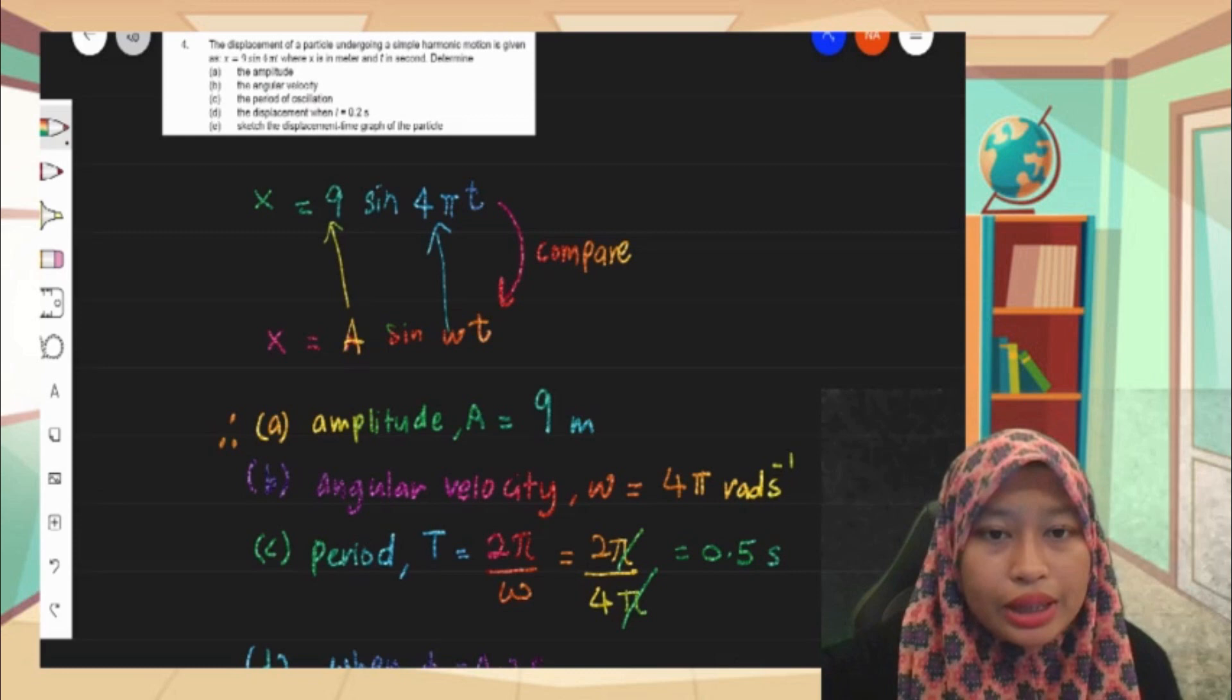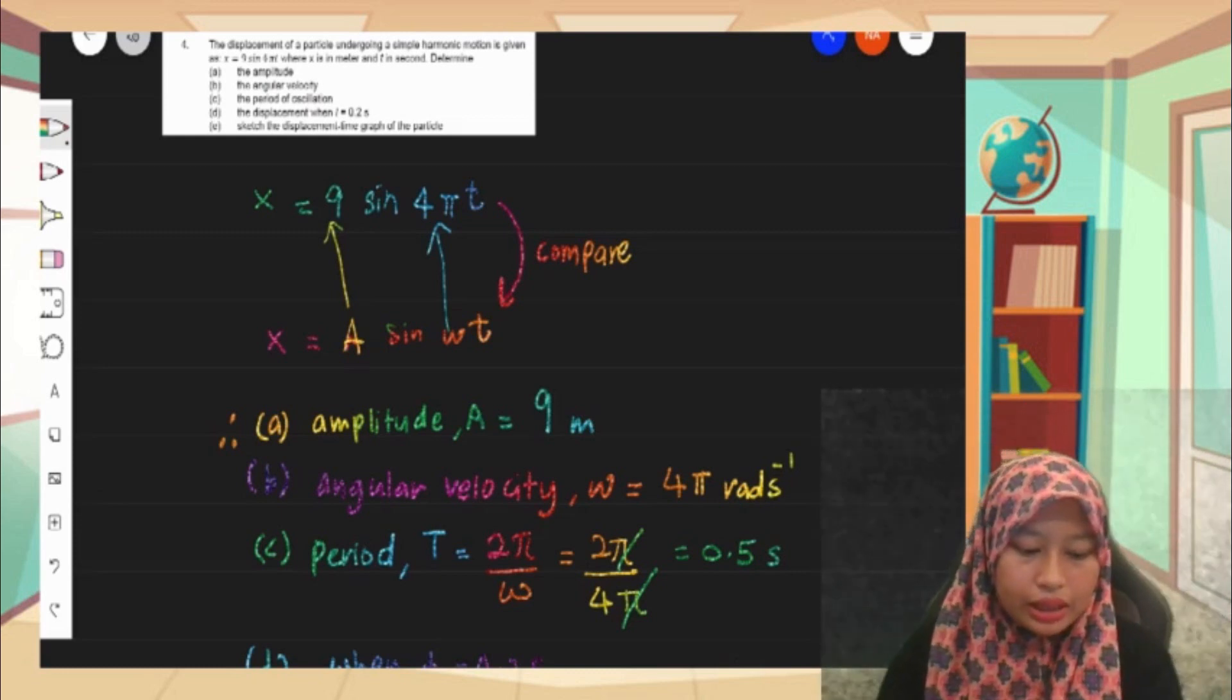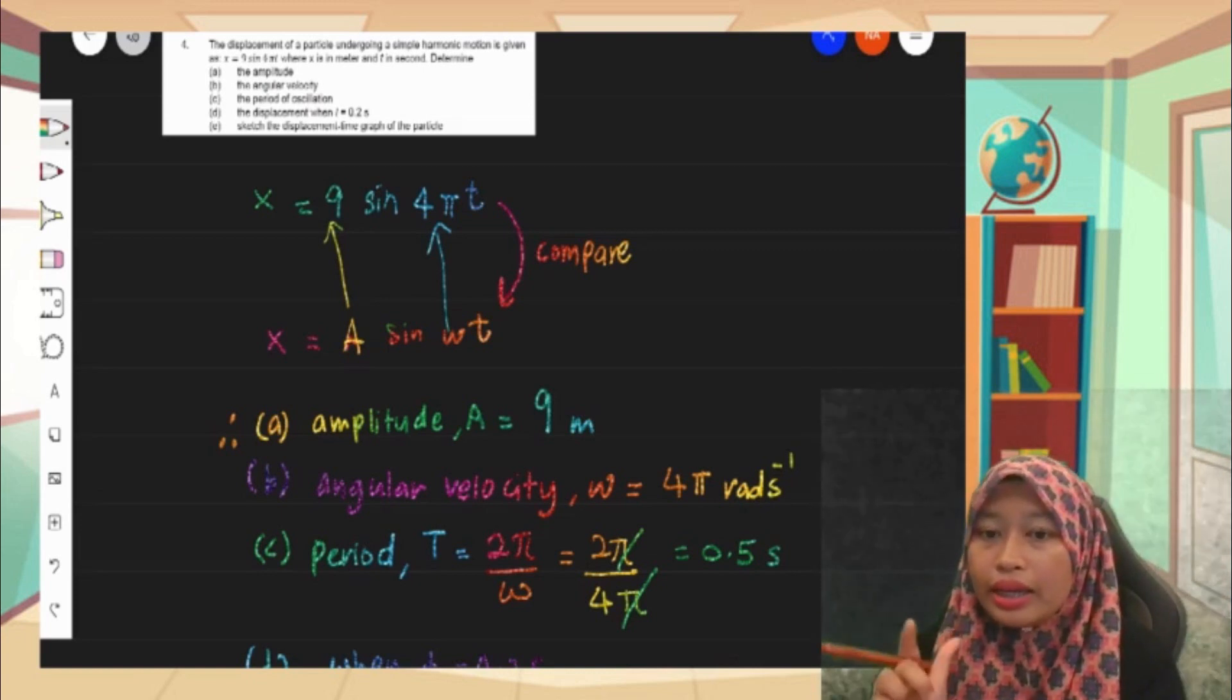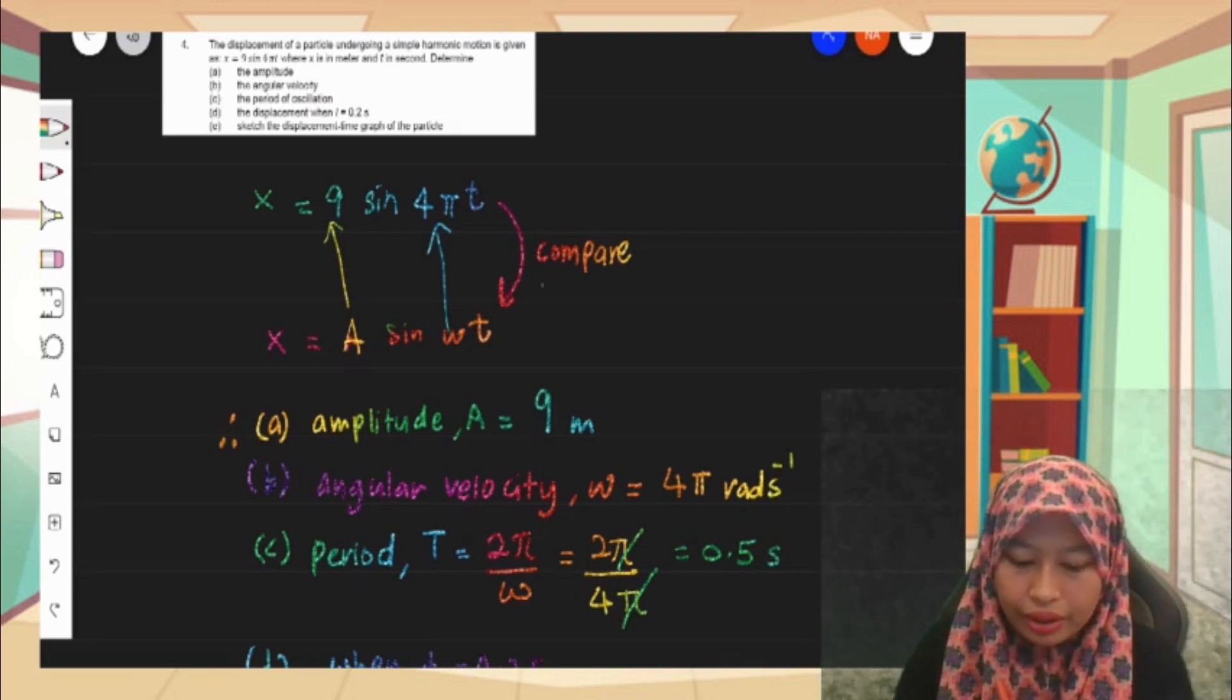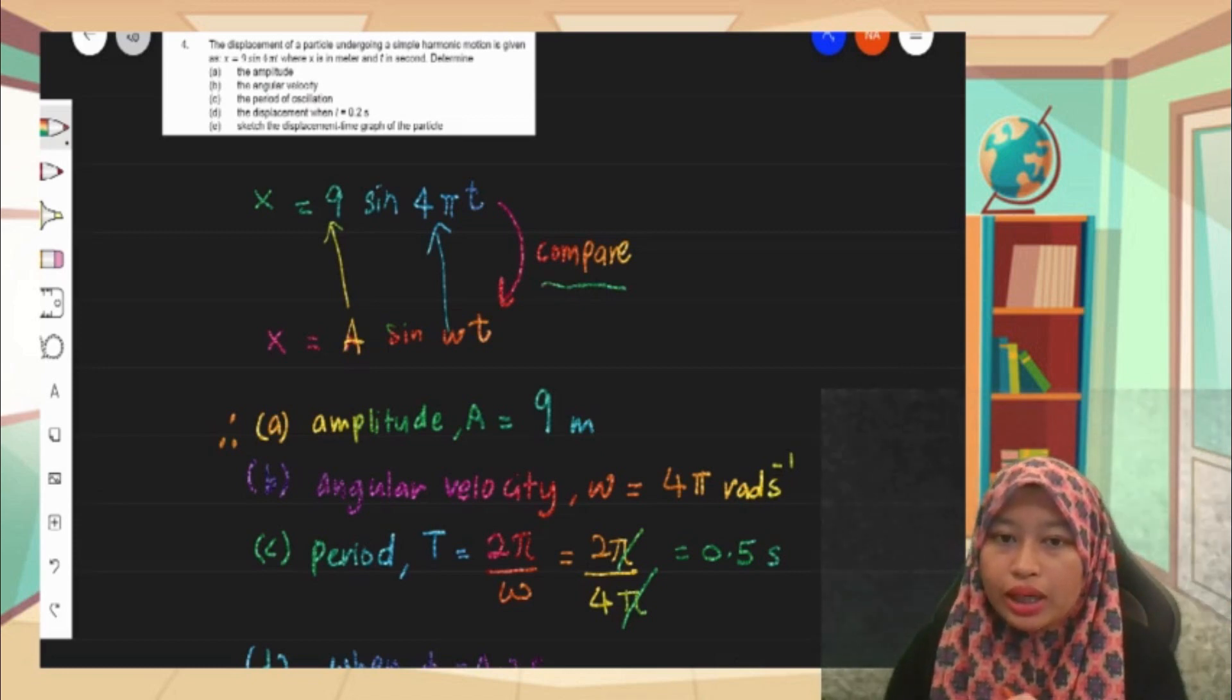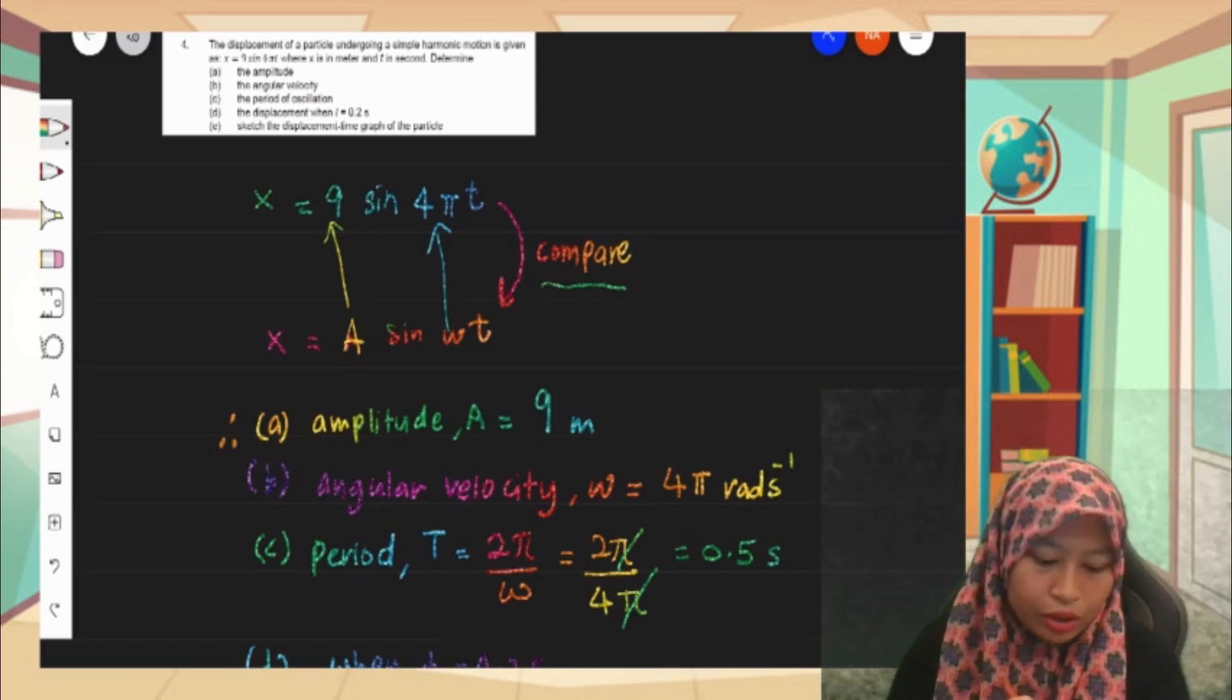When you've got this type of question, just rewrite the equation given. So I rewrite here, our equation given is 9 sine 4π t. The technique here is comparison. So as you can see, I use compare here. So I compare with what? I compare with the general equation of the simple harmonic motion, which is A sine omega t. So when I compare, I can get the amplitude value immediately,